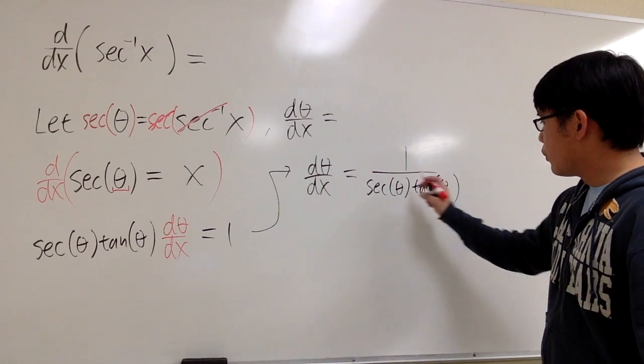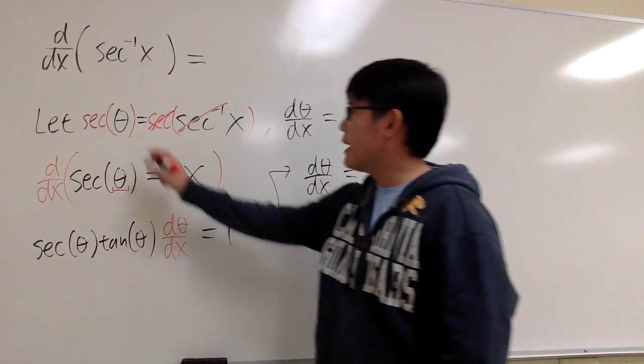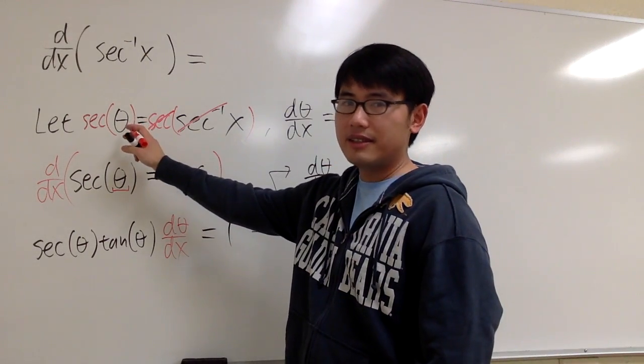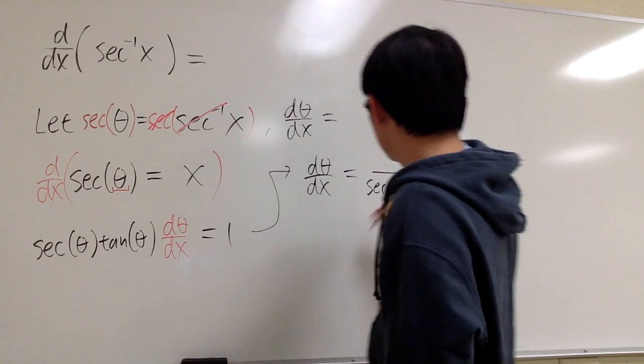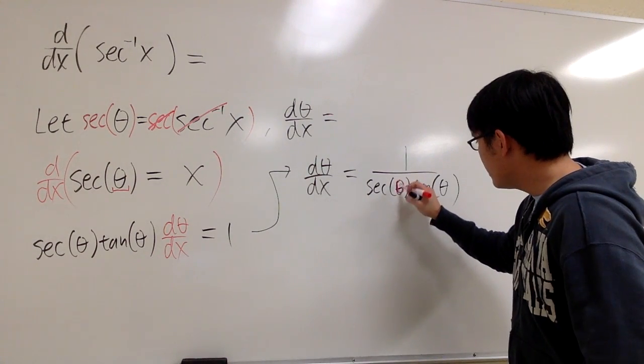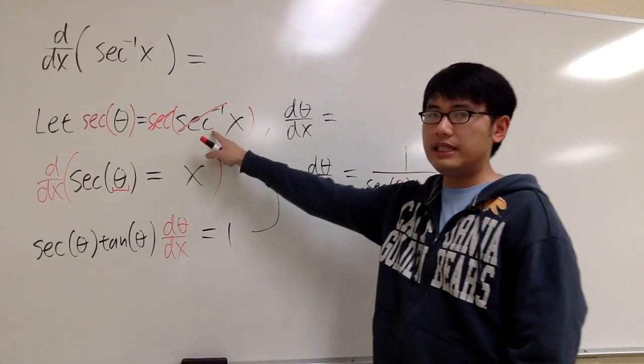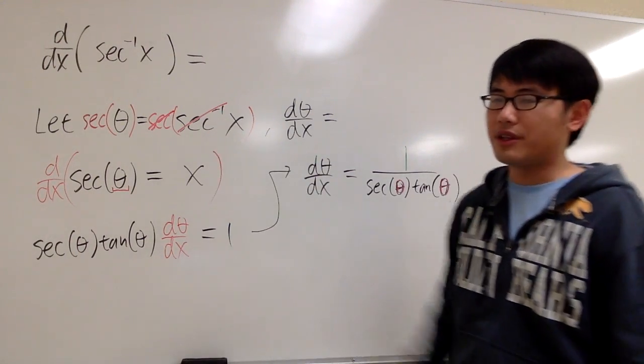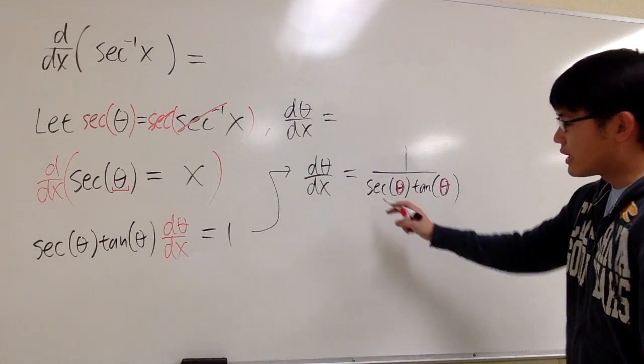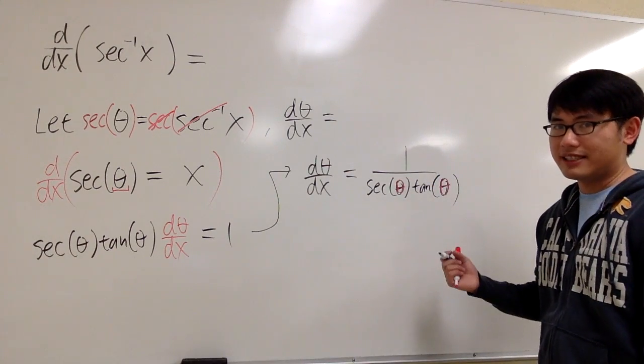And right here, what's theta? If you refer back to the first line, theta is equal to the inverse secant x. So I can just focus on theta and then replace this theta with the inverse secant x right here. This way, we can come with an expression involving just x.